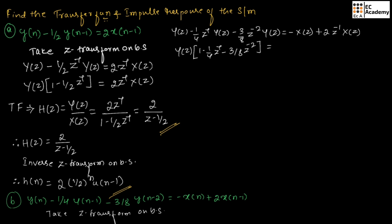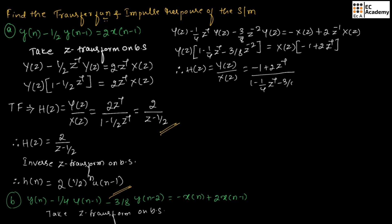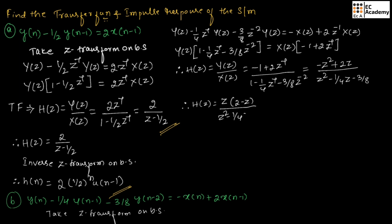...and if we take X(z) as common, we are left with (minus 1 plus 2z⁻¹). Therefore, the transfer function H(z) = Y(z)/X(z) = (minus 1 + 2z⁻¹) / (1 - 1/4 z⁻¹ - 3/8 z⁻²). If we multiply numerator and denominator by z², we get (minus z² + 2z) / (z² - 1/4 z - 3/8). Taking z as common from the numerator: z · (2 - z) / (z² - 1/4 z - 3/8).